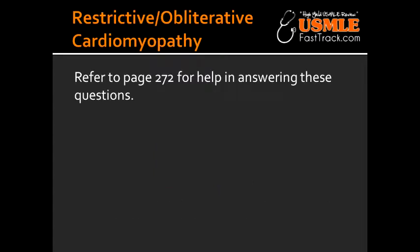What are some of the major causes of restrictive/obliterative cardiomyopathy? Some of the major causes include sarcoidosis, amyloidosis, post-radiation fibrosis, endocardial fibroelastosis, Loeffler syndrome, and hemochromatosis.